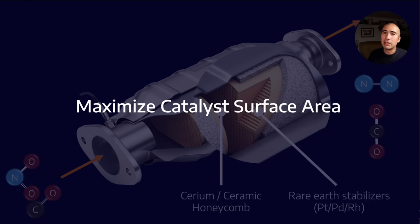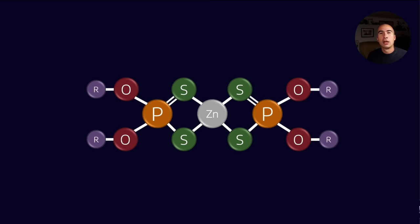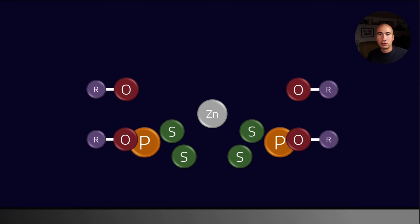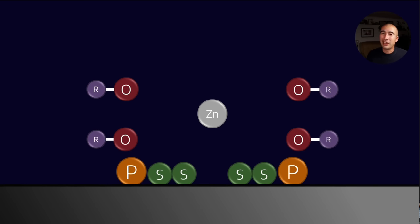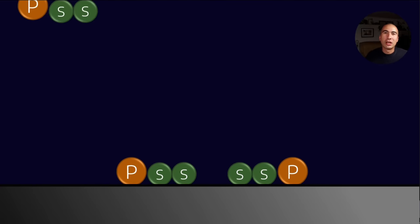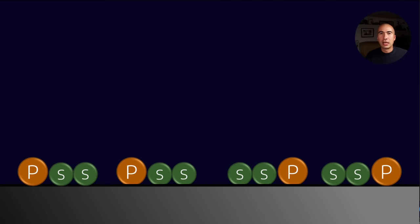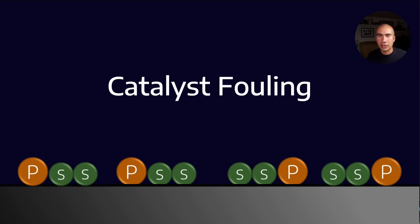This is where ZDTP starts to fall down. What makes it such a good anti-wear additive is that it contains both sulfur and phosphorus, which have an affinity for metal surfaces. Unfortunately, if we have any ZDTP in our exhaust, that means it's going to want to coat the different surfaces. As a result, if we have exhaust gases trying to make contact with these metals, they're unable to do so. This is a process known as catalyst fouling.